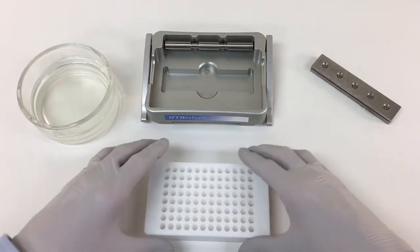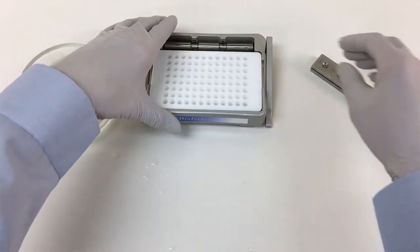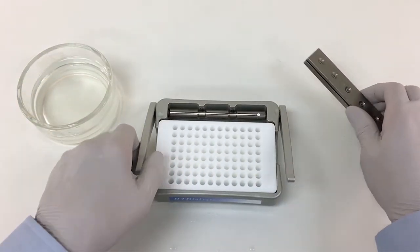Open the base clamp and place the assembled Teflon block in the base. Insert the stainless steel pressure plate between the Teflon block and the cam.